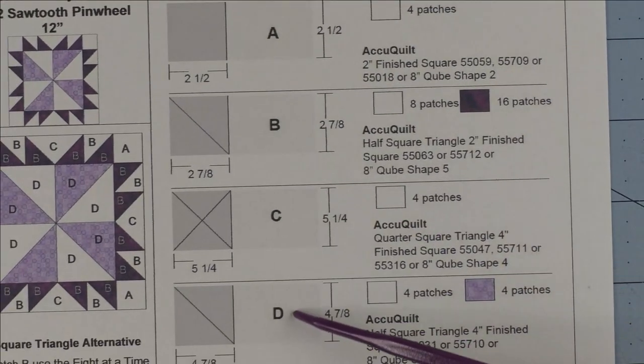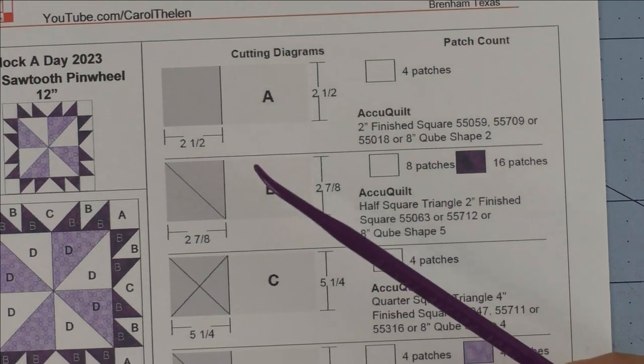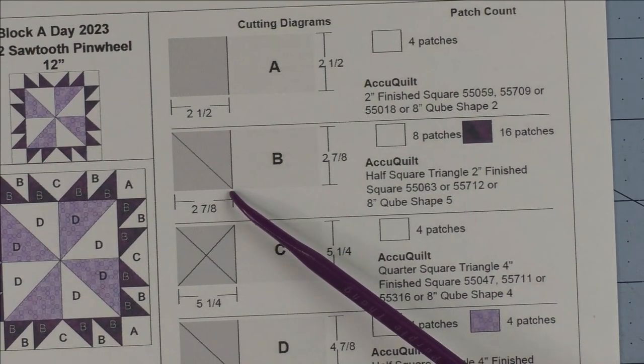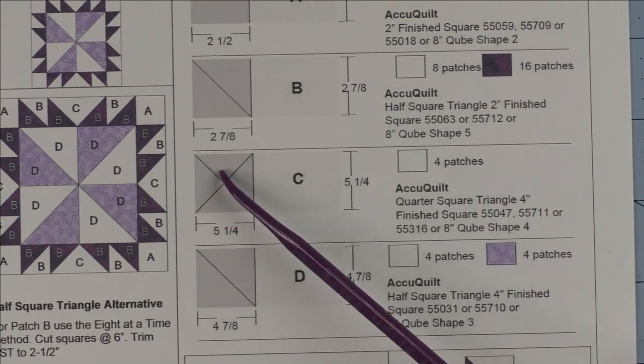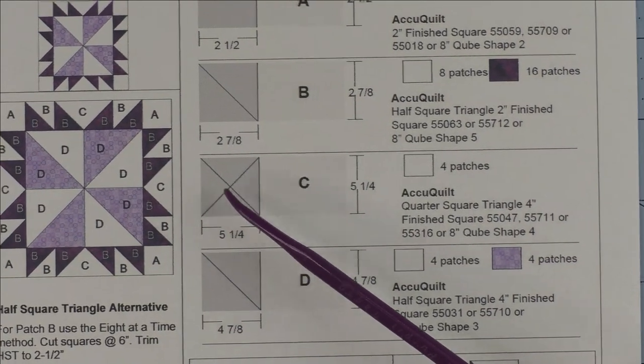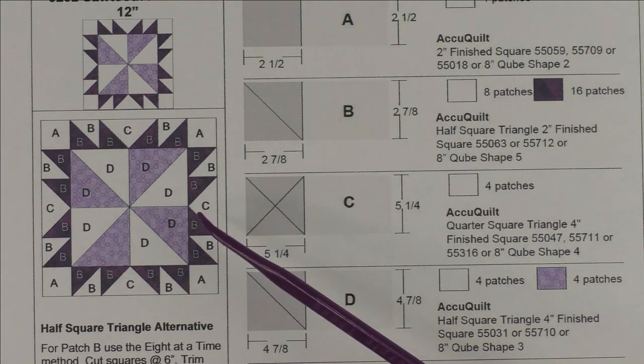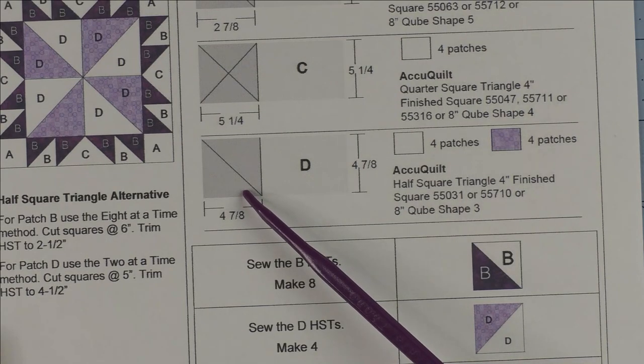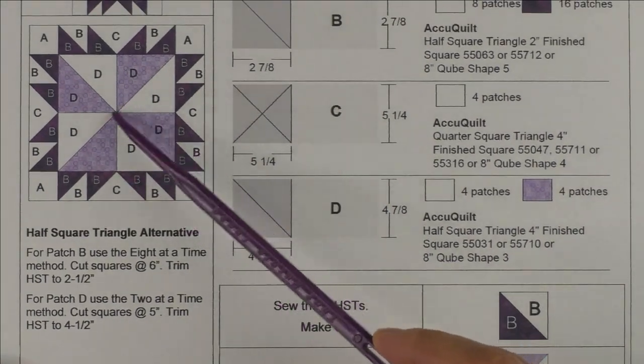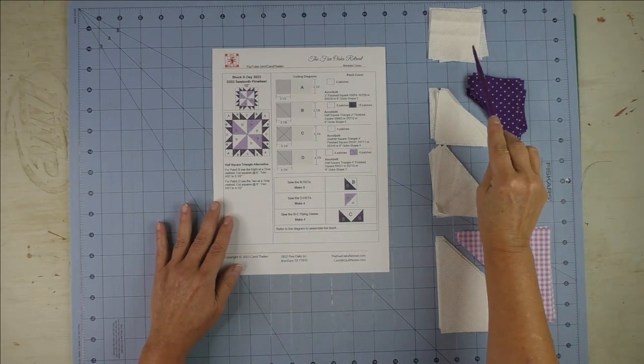There are four different patches: the small square, the small half square triangle, and this is a quarter square triangle to use for the little flying geese here in the centers, and then finally the larger half square triangle that goes in the center of the block.